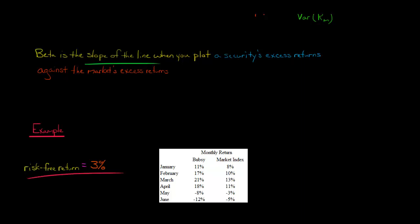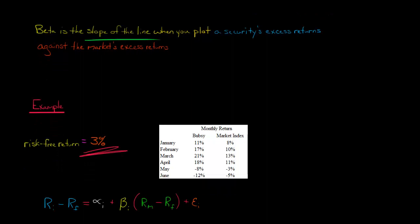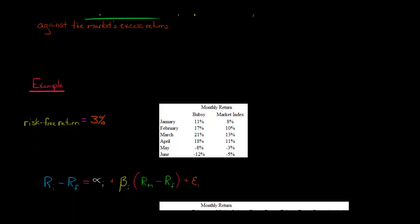We're also going to assume that the risk-free rate of return is 3%. So investors at any point in time without bearing any risk at all could get a return of 3%. That's going to become important because we're plotting the excess returns of the security against the excess returns of the market.